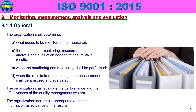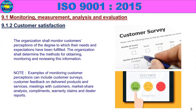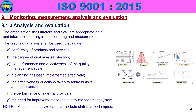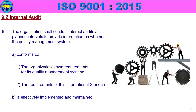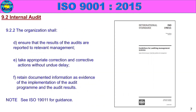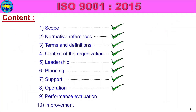Subclasses: 9.1 Monitoring, Measurement, Analysis and Evaluation — 9.1 General, 9.1 Customer Satisfaction, 9.1 Analysis and Evaluation; 9.2 Internal Audit. This is all about detail. ISO 9001-2015, 10 classes. That's the 8 classes.